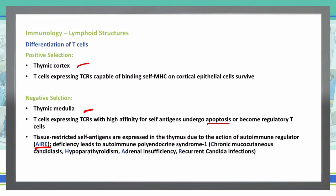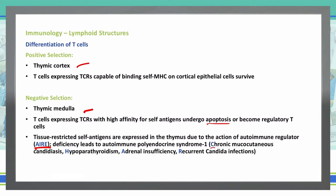A deficiency in AIRE leads to autoimmune polyendocrine syndrome 1. You can remember this using the mnemonic C-H-A-R: C is for chronic mucocutaneous candidiasis, H is for hypoparathyroidism, A is for adrenal insufficiency, and R is for recurrent candida infections.